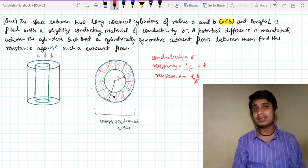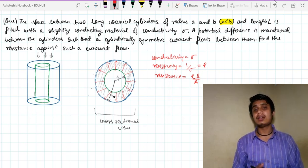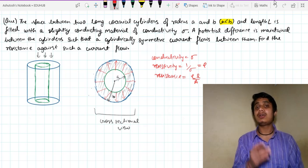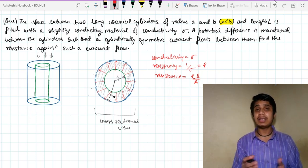What is resistance? It is rho L upon A. That is resistivity into length of the wire into area of cross section.